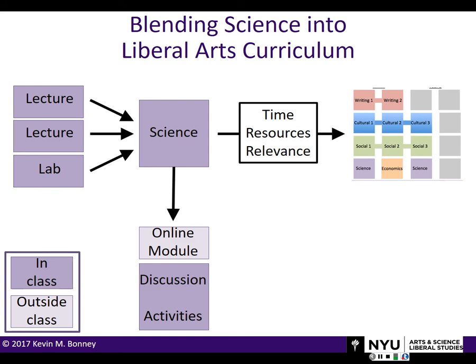The first thing we did is we turned our class into a flipped classroom — we made online lectures that the students could do before class. That freed up our class time so we could have more active learning activities. We do a lot of discussions rather than lecturing, and we have hands-on activities — whatever lab-like activities we can do in the classroom — as well as some technological resources.